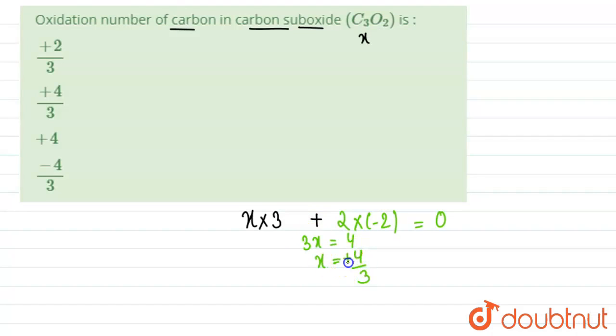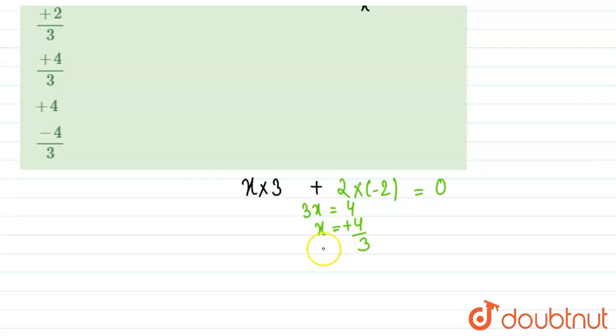So the oxidation state of carbon in carbon suboxide is 4 by 3. And also we can make the structure of carbon suboxide. So it has the following structure. Okay, this is our carbon suboxide.